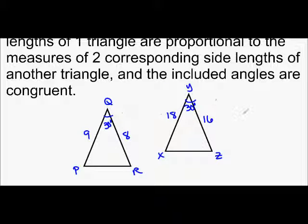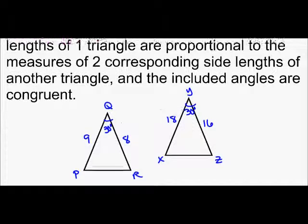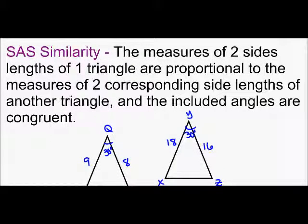So, all I've done is multiplied by 2. That's the same ratio, and the included angles are congruent. So, that would be side-angle-side similarity.